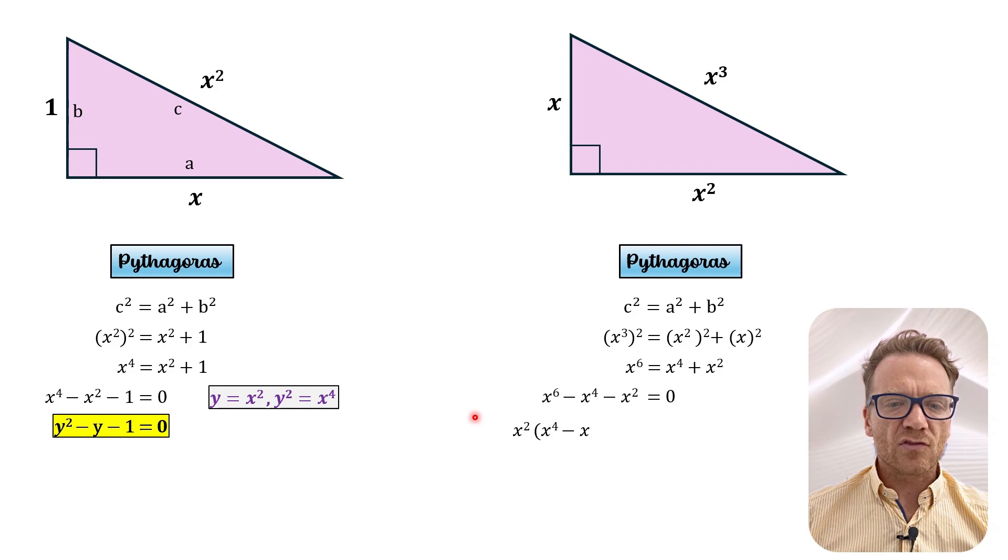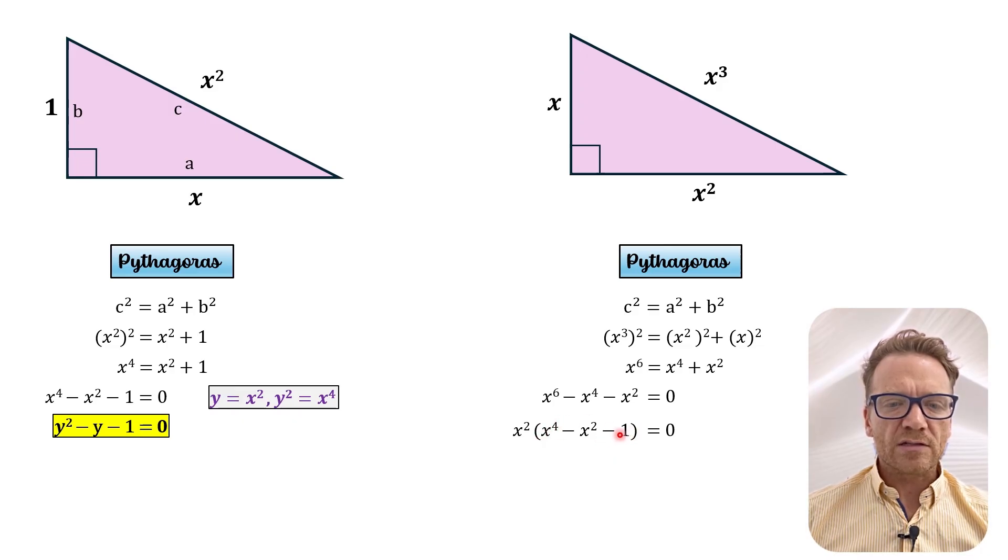And then we can actually factor out the x squared. So x squared multiplied by x to the power of 4 minus x squared minus 1 equals 0. So you can see that we have this expression inside the brackets is the same as this.